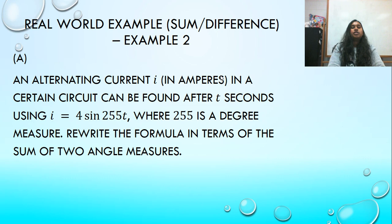In a certain circuit can be found after t seconds using the formula i equals 4 sine 255t, where 255 is a degree measure. Rewrite the formula in terms of the sum of two angles. So they've told me what unit they want. They want it in degrees, and I have to rewrite it in the sum of two angles.